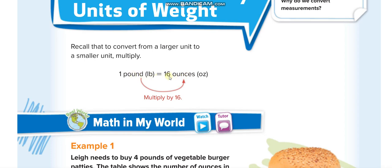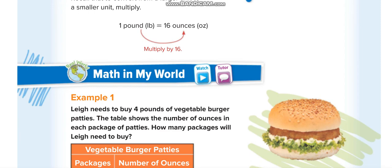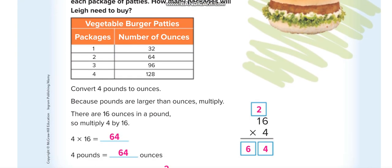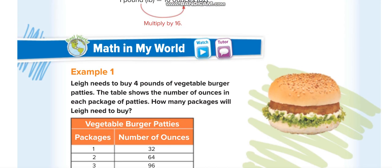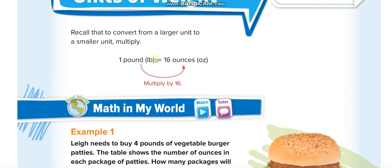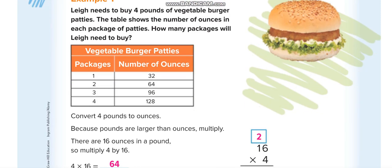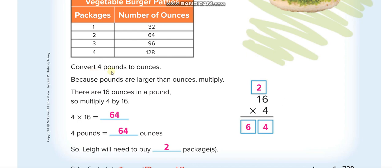In the first example they are showing some number of packages and number of ounces. One package is 32 ounces. Since one pound is equal to 16 ounces, 2 pounds equals 16 times 2, which is 32 ounces — so one packet is 2 pounds. They are asking us to convert 4 pounds to ounces, so we multiply 4 times 16, which equals 64 ounces — that means two packages.